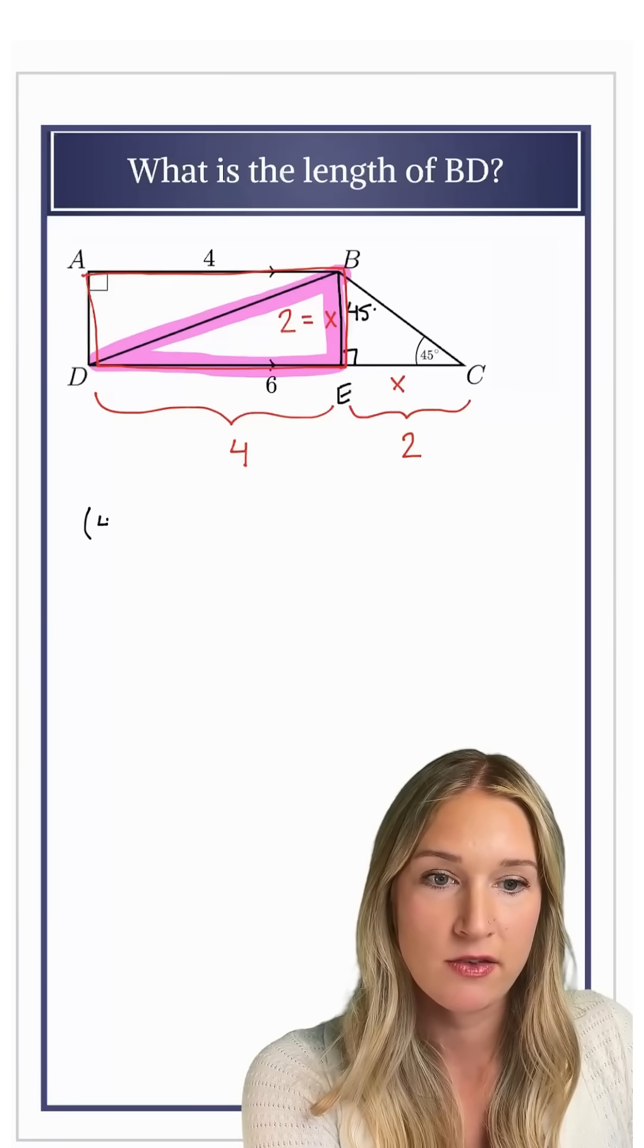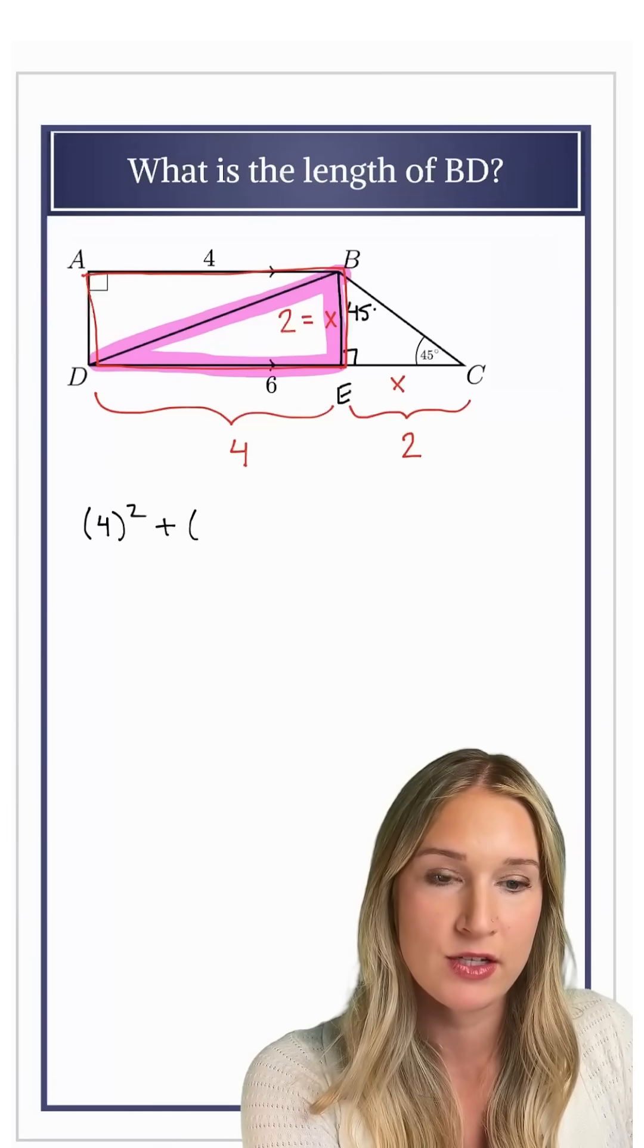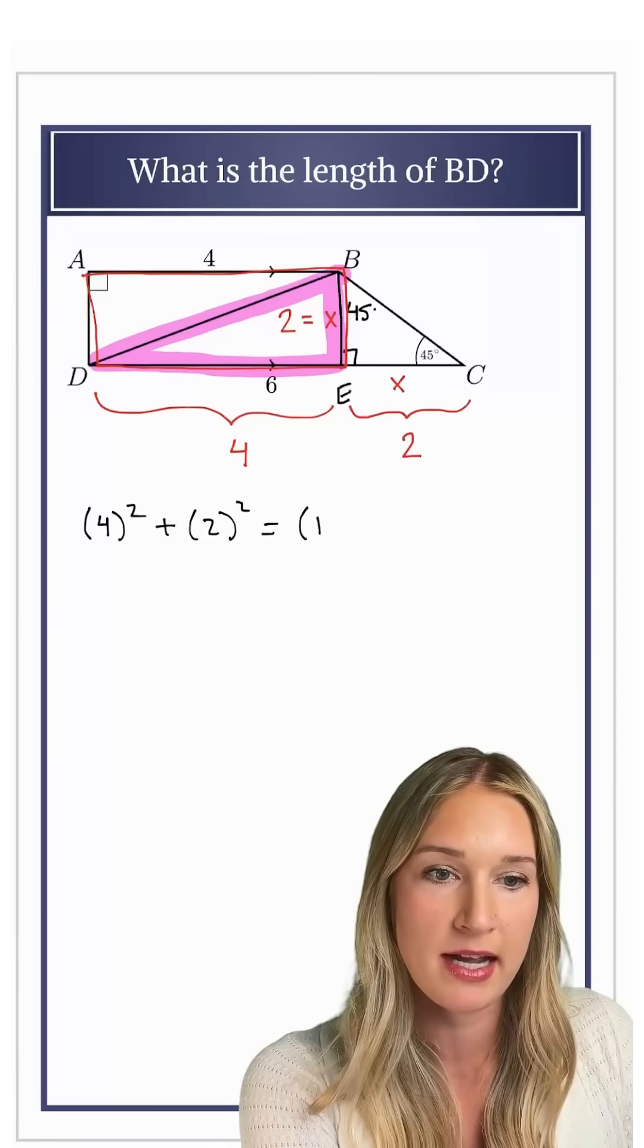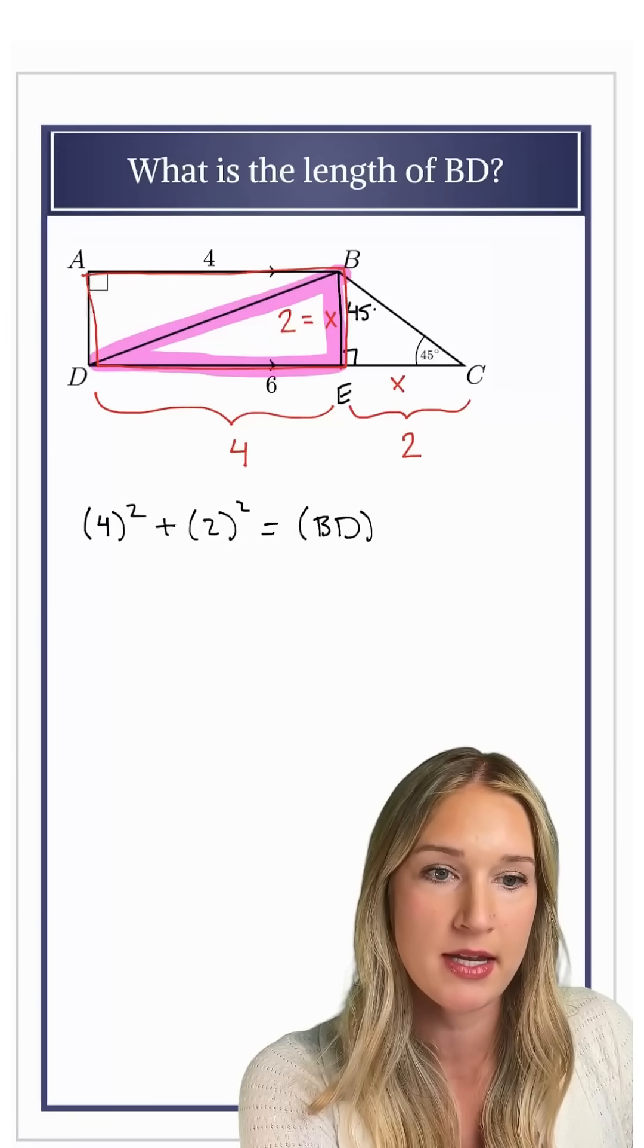My first leg is 4. My second leg is 2, and that will equal the square of my hypotenuse, which is BD.